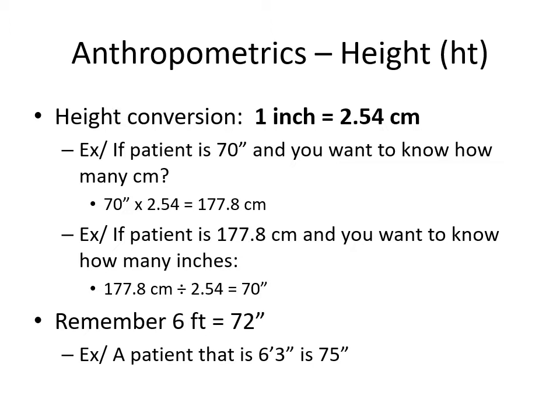A common error is nurses recording 60 inches when a patient is 6 feet 0 inches tall. Remember: 6 feet is 72 inches, so a patient who is 6 foot 3 is 72 plus 3 additional inches for 75 inches total.